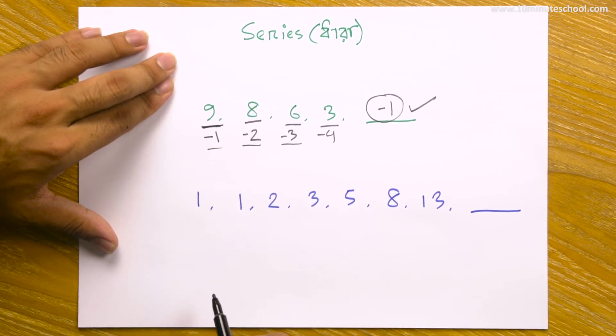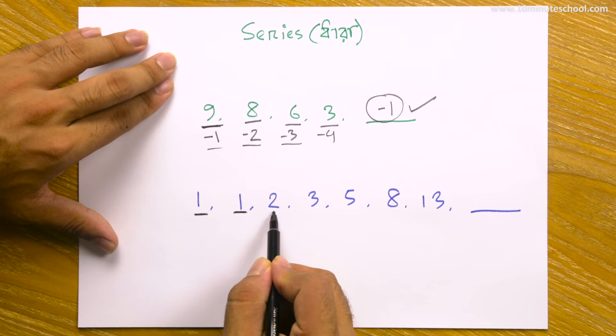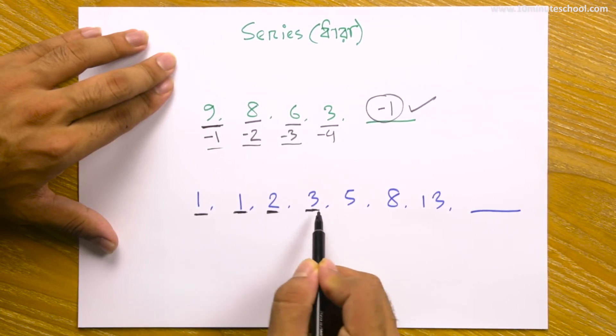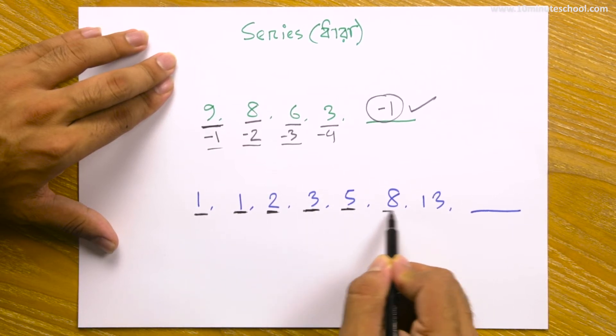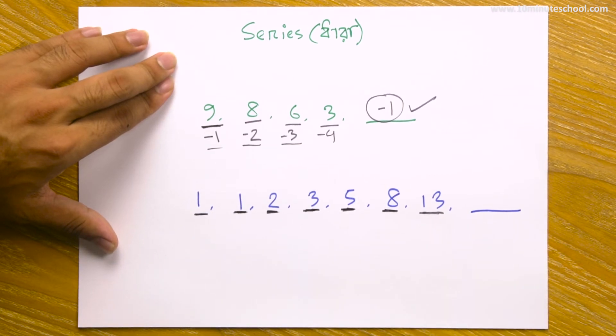This series is a very famous series. This is the most famous series - this is the Fibonacci series. The first one is 1, right? Then 1, 2, 3, 5, 8, 13.